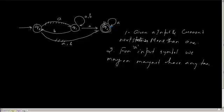In DFA, you have to give for every possible symbol and current state, we need to mention what is the next state. But we may or may not have any transition in NDFA — that means we will have an empty transition.